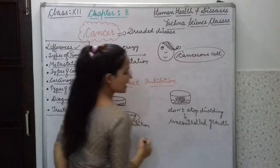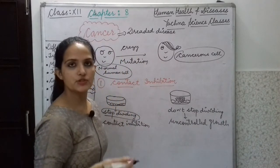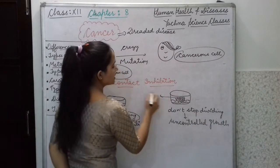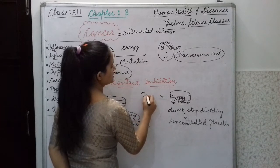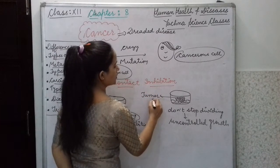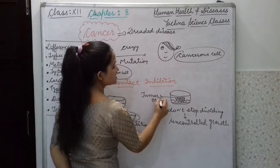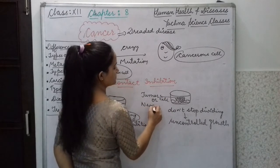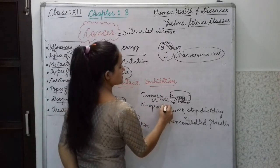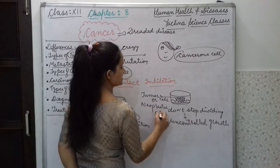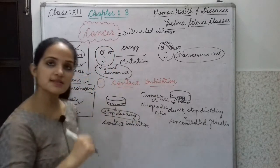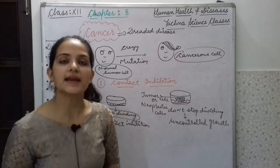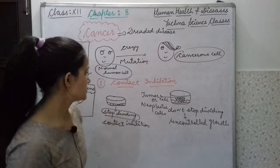This means cancerous cells lack the property of contact inhibition, and they form a tumor — also called tumor cells or neoplastic cells. This is the basic difference between normal human cells and cancerous cells.